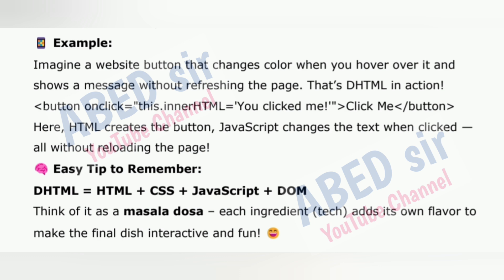Example: Imagine a website button that changes color when you hover over it and shows a message without refreshing the page — that's DHTML in action. Button onclick sets innerHTML to 'You clicked me'. Here, HTML creates the button and JavaScript changes the text when clicked, all without reloading the page. Easy tip: DHTML = HTML + CSS + JavaScript + DOM. Think of it as a masala dosa — each ingredient adds its own flavor to make the final dish interactive and fun.